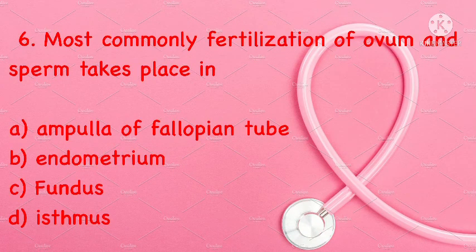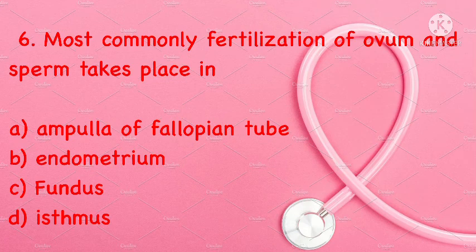Most commonly, fertilization of ovum and sperm takes place in: ampulla of the fallopian tube, endometrium, fundus, or isthmus. Correct answer: ampulla of the fallopian tube.